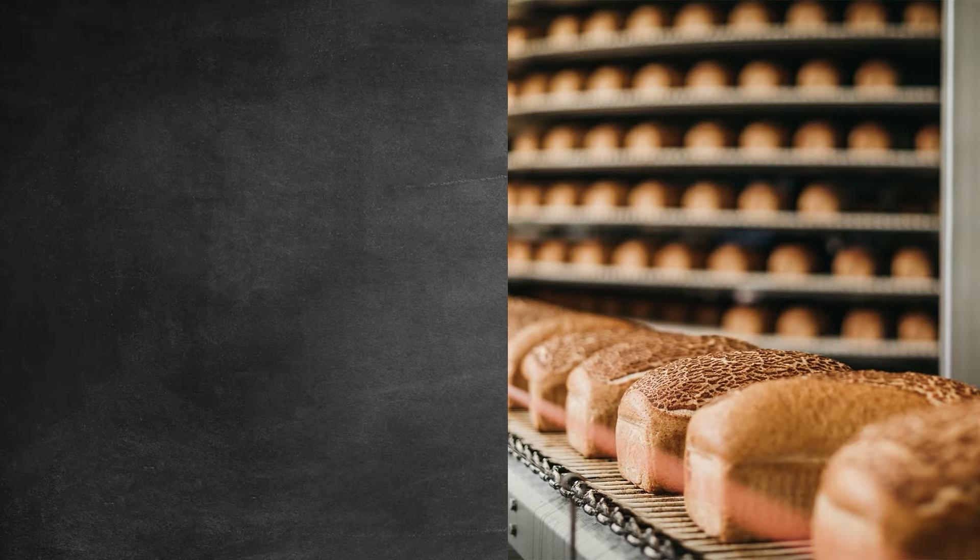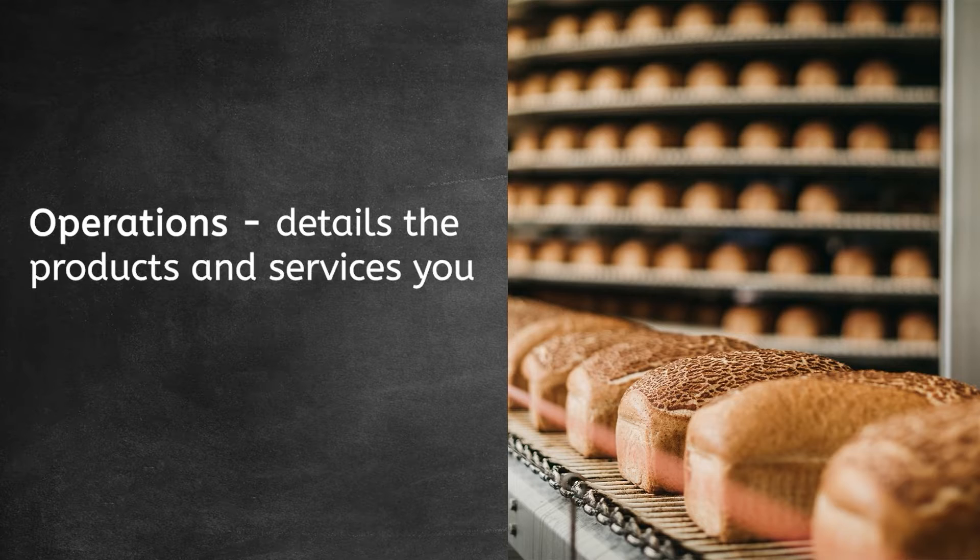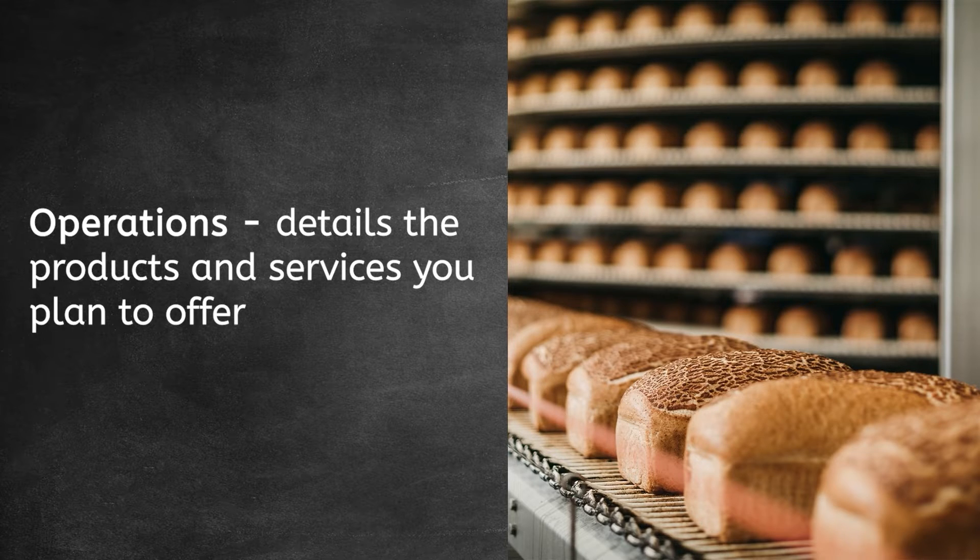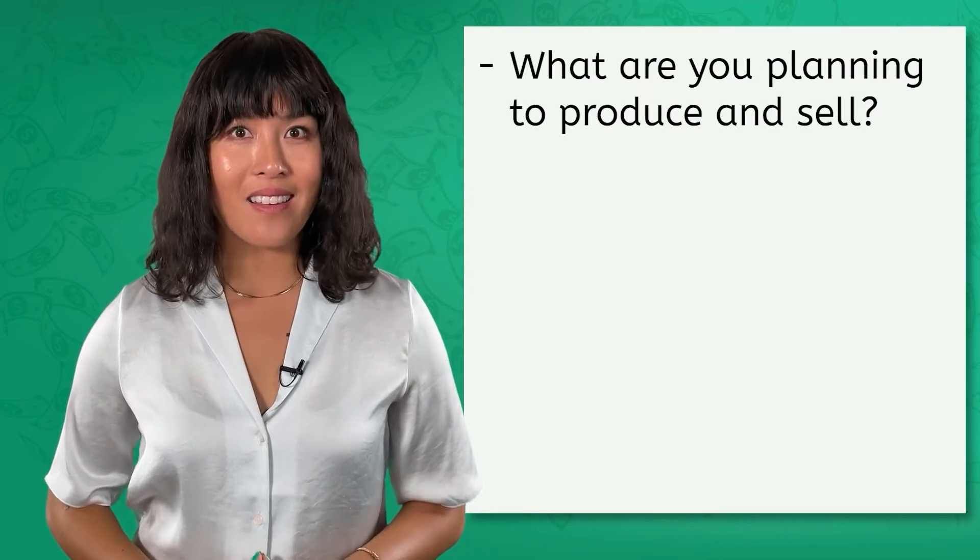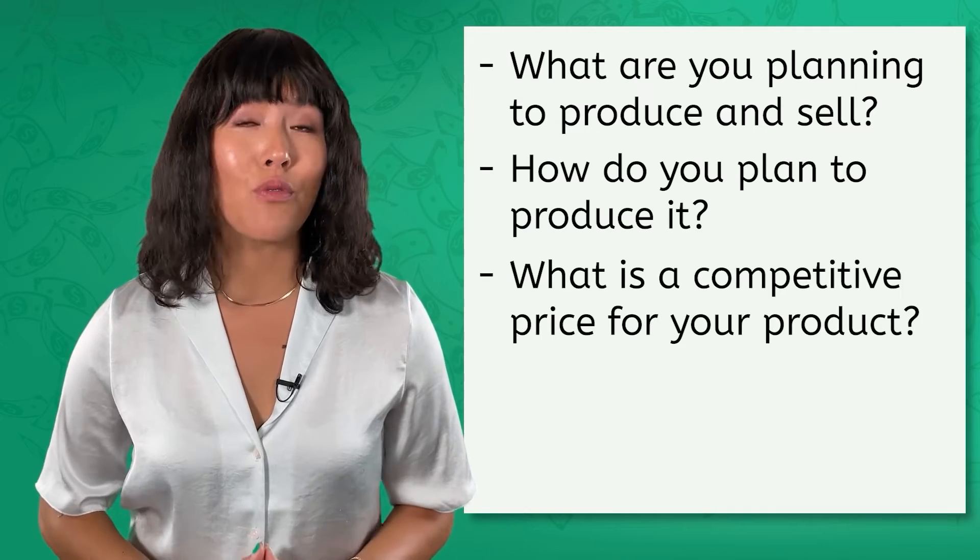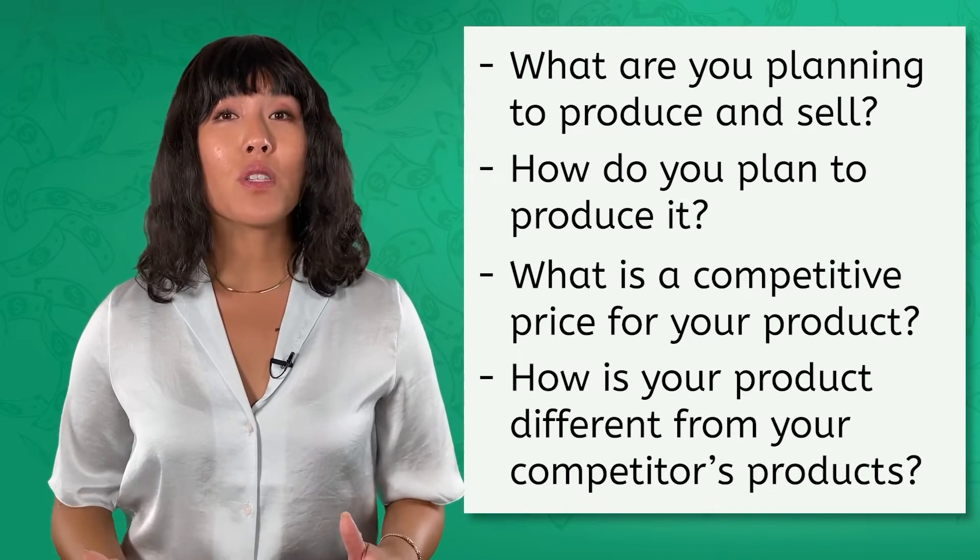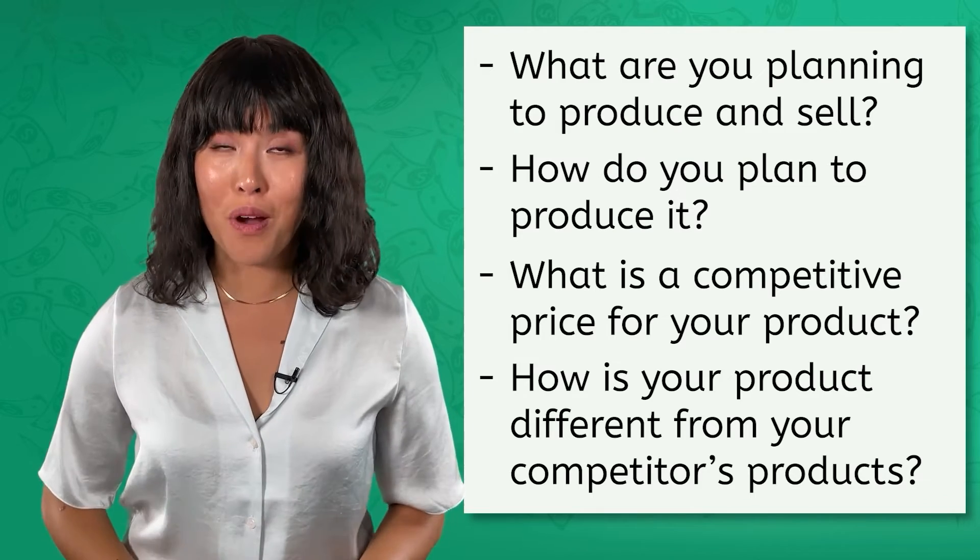After outlining the corporate structure, you're going to want to start outlining your operations, detailing the products and services you plan to offer. For example, if you're opening a bakery, you may want to list the kinds of breads and pastries you plan to sell. What are you planning to produce and sell? How do you plan to produce it? What is a competitive price for your product? You also want to discuss how your product is different from your competitors' products.